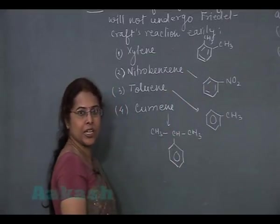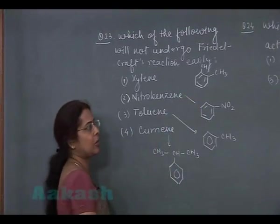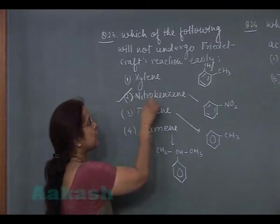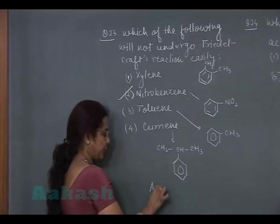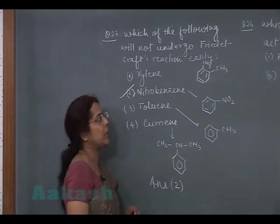So in all the four options, only nitro group is ring deactivating group. It means Friedel-Craft substitution reaction will become most difficult in case of nitrobenzene. So answer should be 2. Correct answer is option number 2.